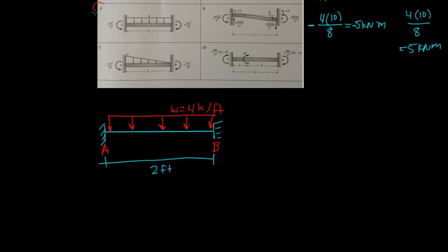Using this chart, we can look at number four, and number four says, on the left side, it's going to be negative WL squared over 12, and on the right side, it's going to be positive WL squared over 12. W, in our case, is the four. Is the four. The length is two.